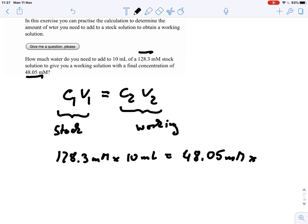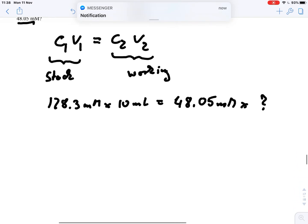C1V1 times the unknown concentration. That is the total concentration. That is the total volume that we are dealing with at the end.